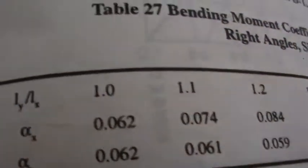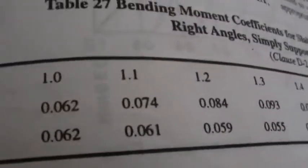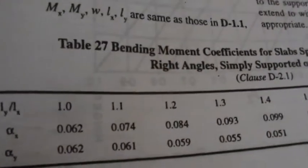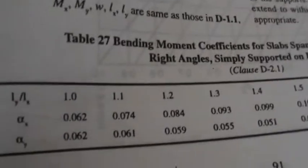LY by LX are these things. And alpha X value is here, alpha Y value is here now. Alpha X values are now here, alpha Y values are now here. For different LY by LX, he has given alpha X and alpha Y. What is your LY by LX value now?